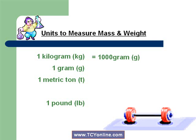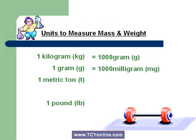We know that 1 kilogram is equal to 1000 grams. And 1 gram is equal to 1000 milligrams. And 1 metric ton is equal to 2204 pounds. Also, 1 metric ton is equal to 1000 kilograms.